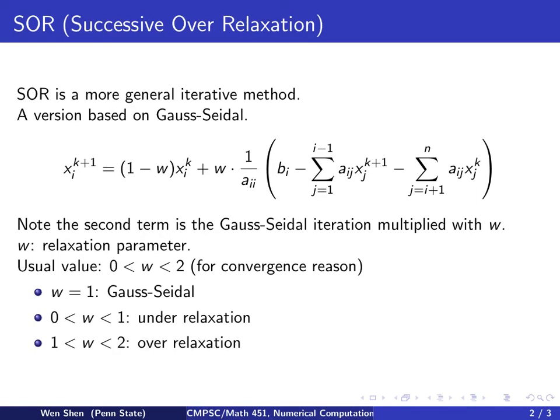If you choose w between 1 and 2, then this guy will be bigger than 1 and this parameter here will be a negative number. So you are saying that I believe the Gauss-Seidel step is going in the right direction, so I'm going to encourage that.